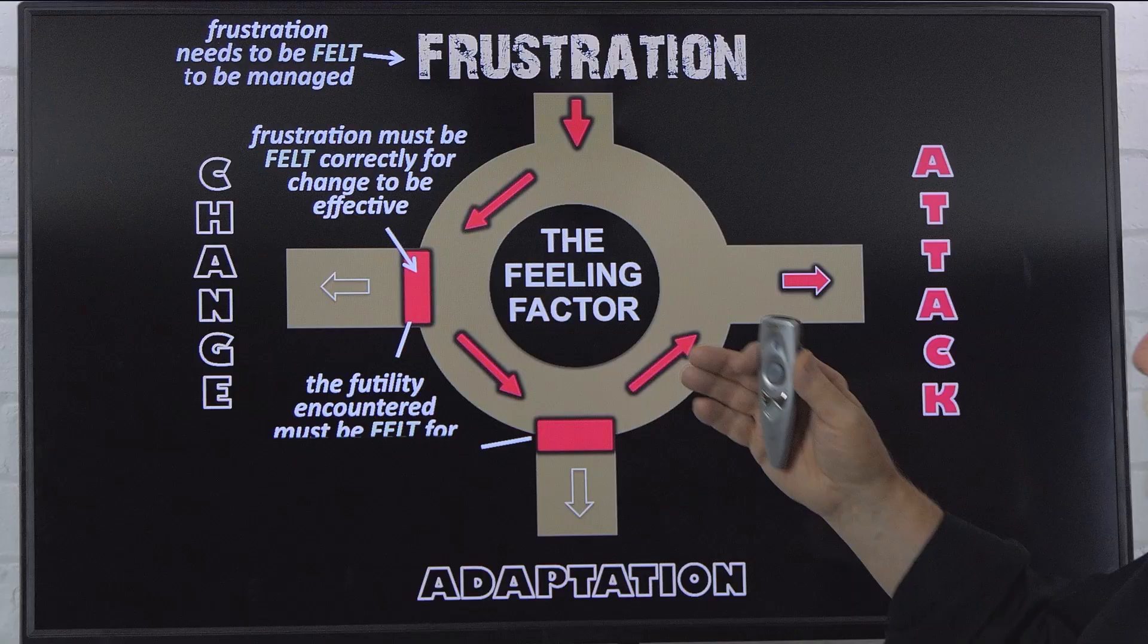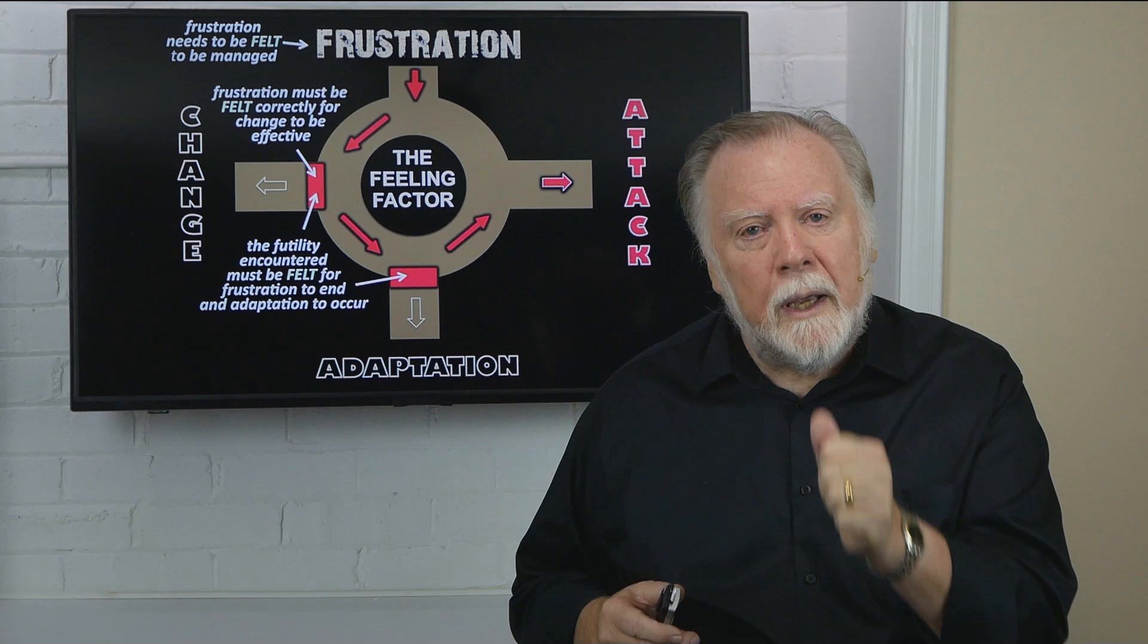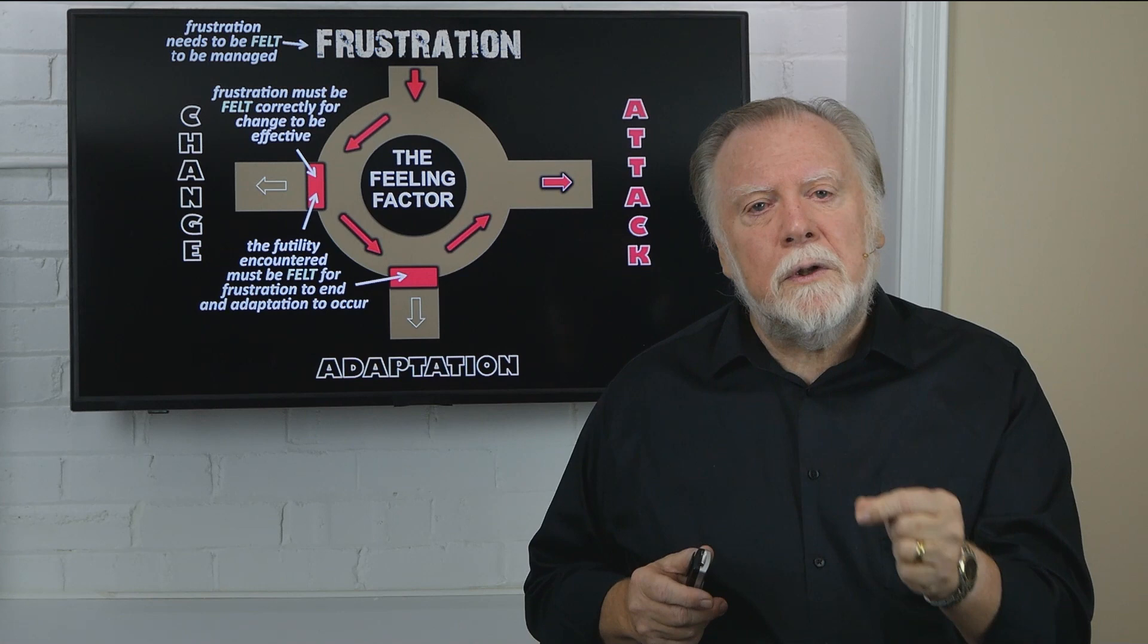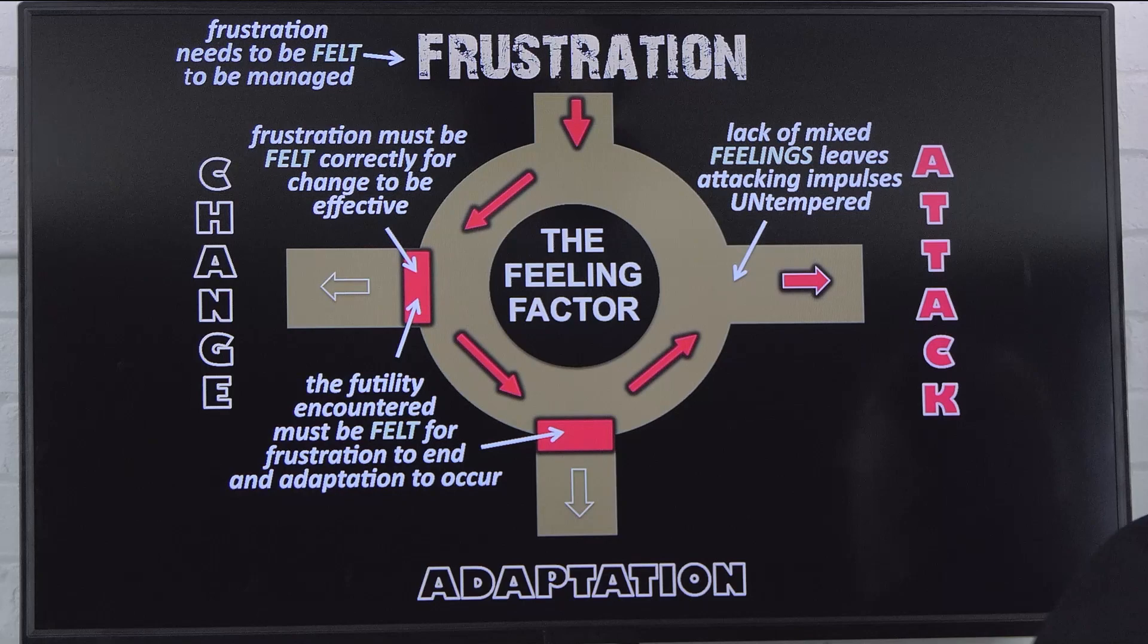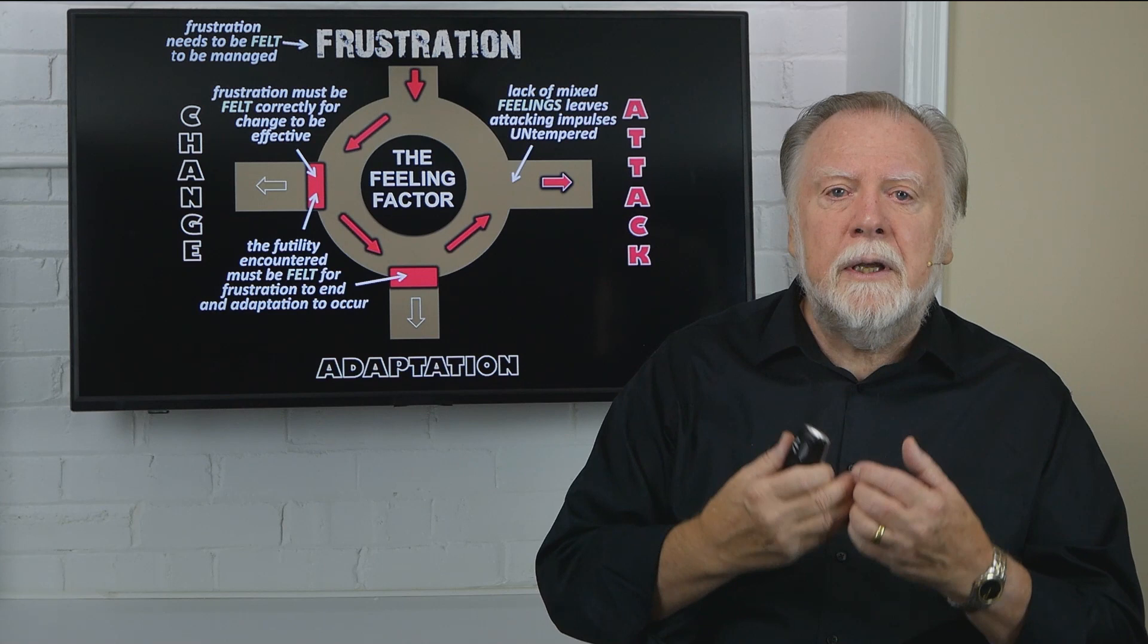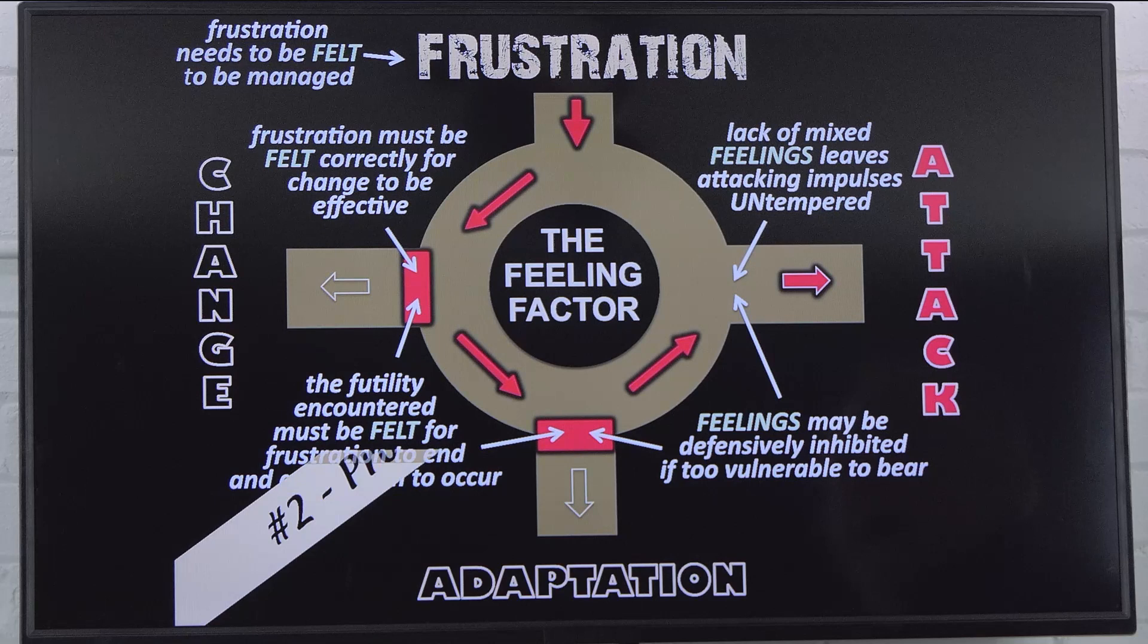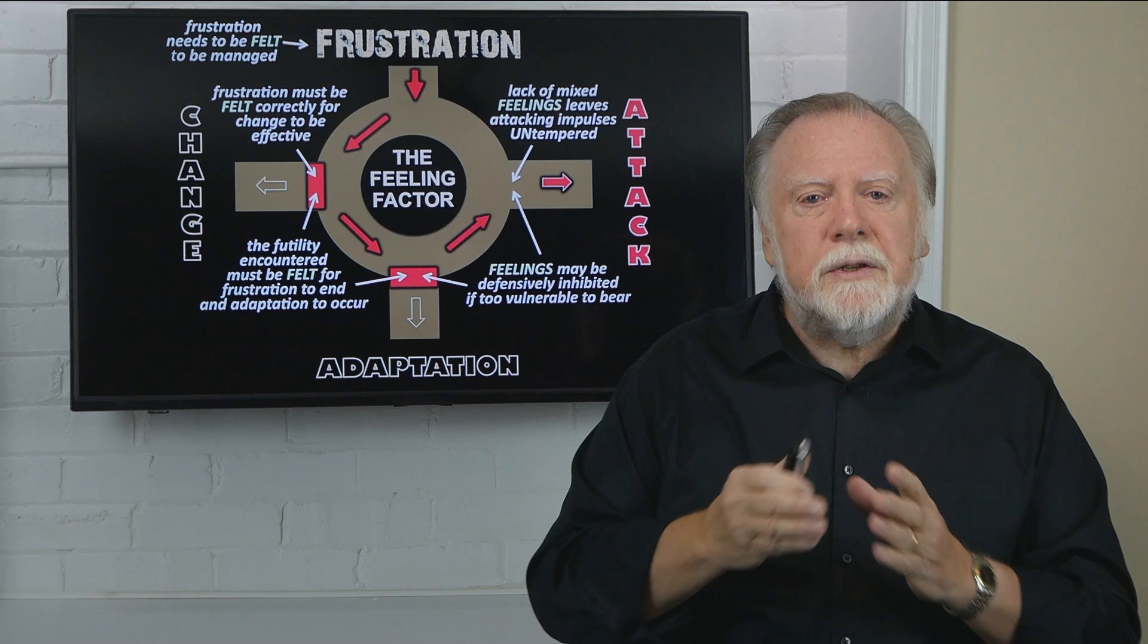Now, the futility encountered must be felt for frustration to end and adaptation to occur. Again, as I said, the brain needs to feel its way through, feel its way through the maze of life. Adaptation is an emotional issue, not a cognitive issue. We need to actually feel the futility encountered, the keen disappointment, the sadness, the grieving that is there. And, of course, we need to have our mixed feelings. The capacity needs to develop and we need to gather our mixed feelings. A lack of mixed feelings leaves attacking impulses untempered. Now, there is one more here. Feelings may be defensively inhibited if too vulnerable to bear. If they have become inhibited, this more systemic creates the scenario for attack to occur.